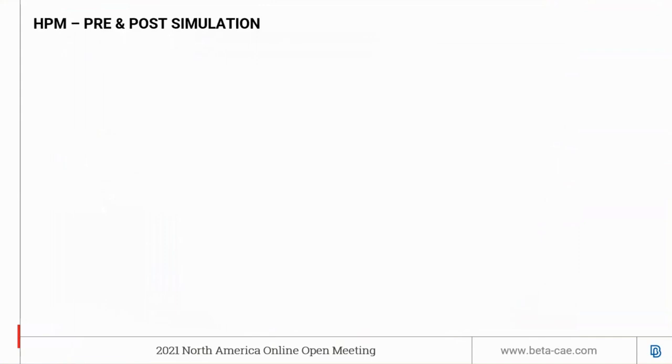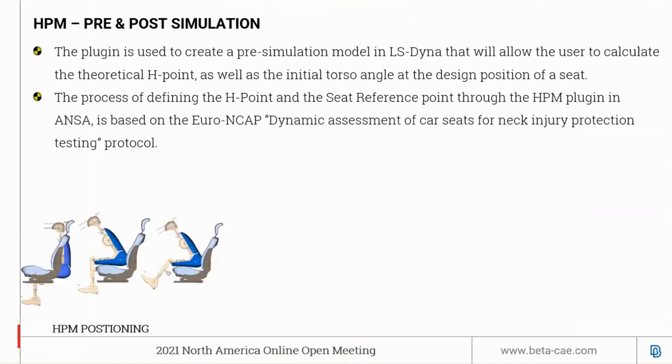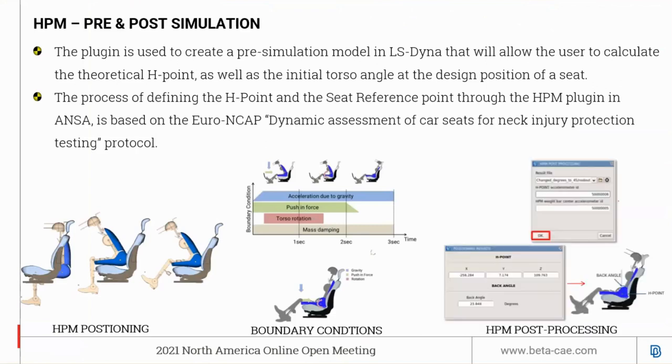This section covers the HPM pre and post simulation plugin. This plugin is used to generate a pre-simulation model in LS-DYNA that allows the user to calculate the theoretical H-point as well as the initial torso angle at the design position of the seat. The process of defining the H-point and the seat reference point through the HPM plugin is based on Euro NCAP and CAP whiplash protocol. The plugin is designed to aid the user in positioning the tool on the seat, setting the required boundary conditions, and post-processing the DYNA results to determine the H-point and back angle.